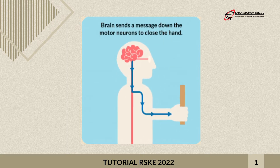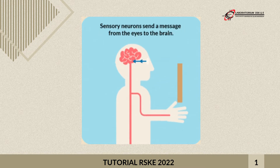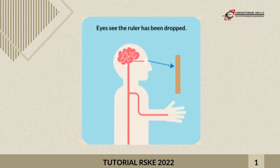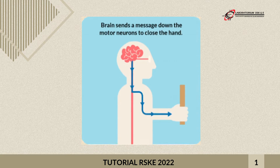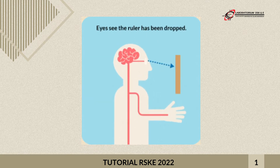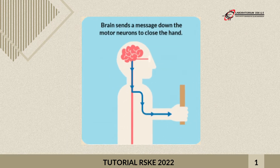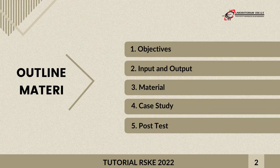The story is that someone sees a ruler falling. From there, the respondent needs to process some information and decide what to do — whether to leave the ruler or catch it so that it doesn't fall. In that limited condition, we have to understand how fast we can process the information. This is called reaction time.